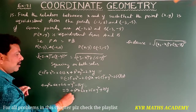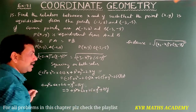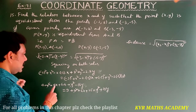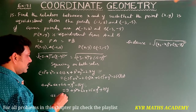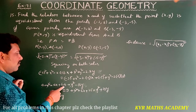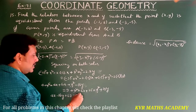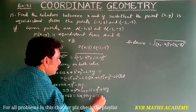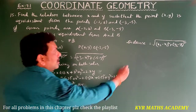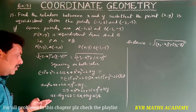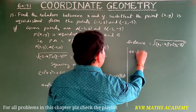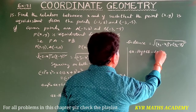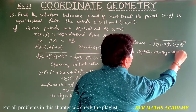On both sides, x² and y² cancel. On the left we have 4x minus 16y plus 68, and on the right we have 6x plus 10y plus 34. Transferring all terms to one side: 4x minus 16y plus 68 minus 6x minus 10y minus 34 equals 0, which gives minus 2x minus 26y plus 34 equals 0.